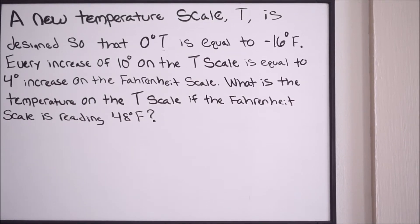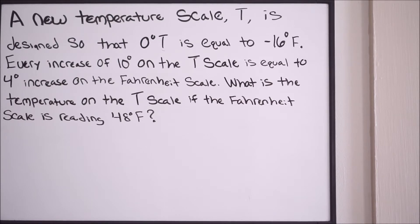On this example we are dealing with an advanced type of algebra problem. Let's read it and talk about how we're going to set this up. A new temperature scale T is designed so that 0 degree T equals negative 16 degrees Fahrenheit. Every increase of 10 degrees on the T scale equals a 4 degree increase on the Fahrenheit scale. What is the temperature on the T scale if the Fahrenheit scale is reading 48 degrees Fahrenheit?